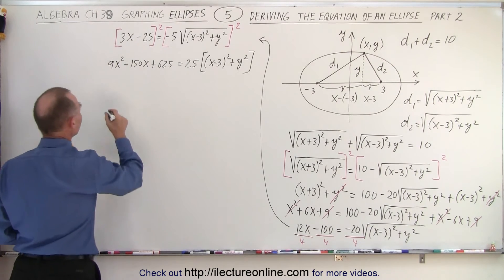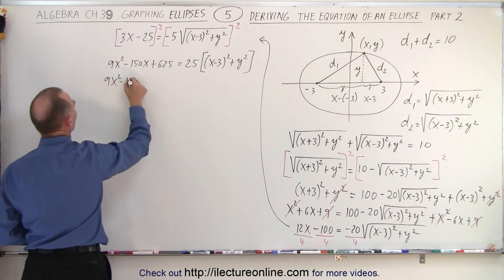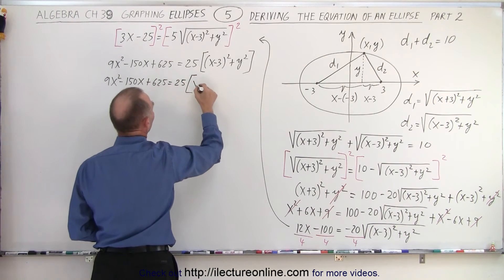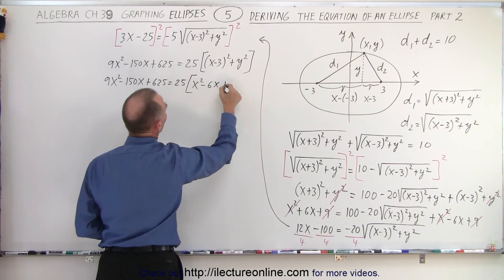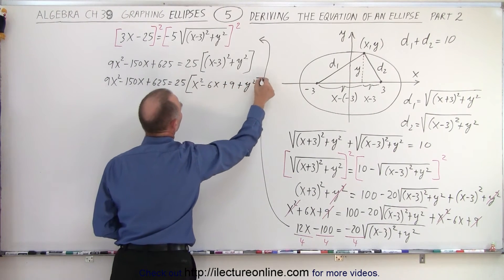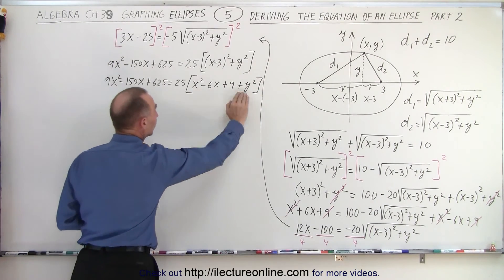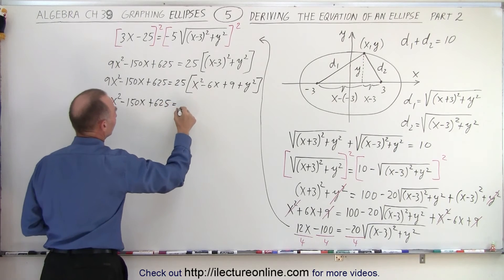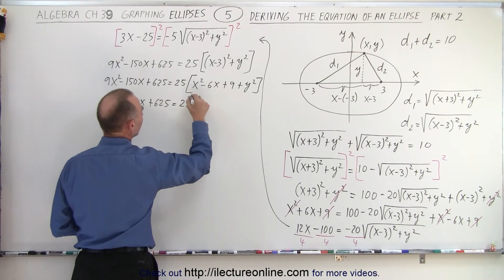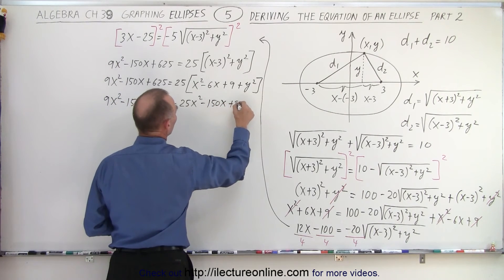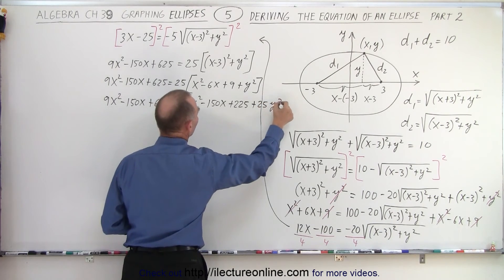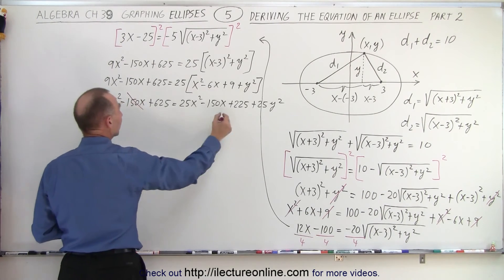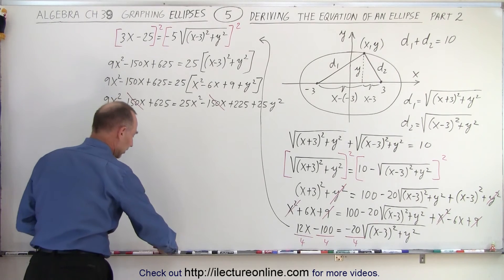So we end up with 9x squared minus 150x plus 625 is equal to 25 times, where in the bracket we end up with x squared minus 6x plus 9 plus y squared. Now we multiply the 25 with each term: 9x squared minus 150x plus 625 is equal to 25x squared minus 150x plus 225 plus 25y squared. Notice we can simplify by getting rid of minus 150x on both sides of the equation.